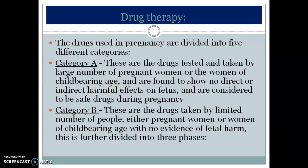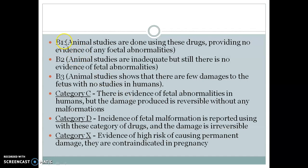Category B drugs are taken by a limited number of pregnant women or women of childbearing age with no evidence of fetal harm. Category B is further divided: B1 — animal studies show no evidence of fetal abnormalities; B2 — animal studies are inadequate but still show no evidence of fetal abnormalities; B3 — animal studies show some evidence of damage to the fetus with no adequate studies in humans.